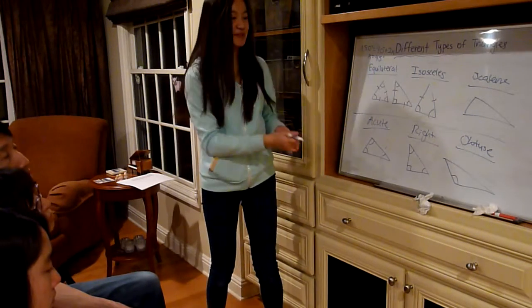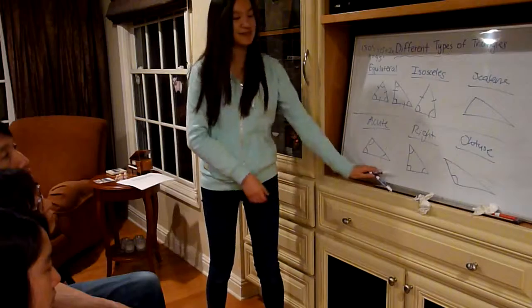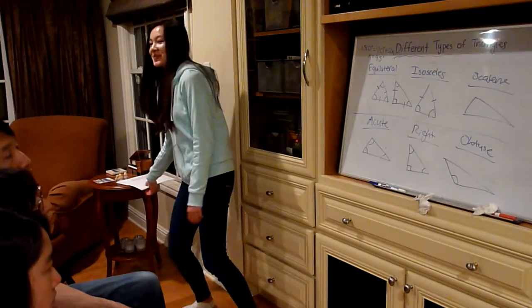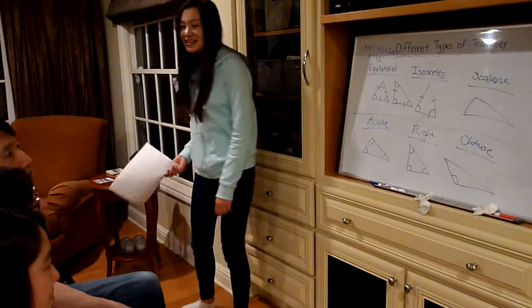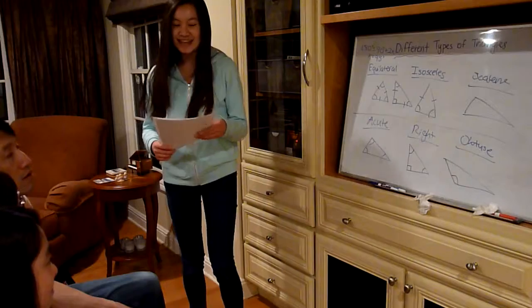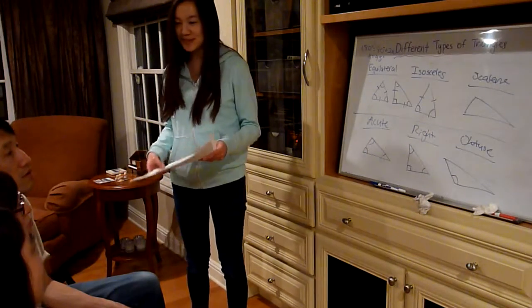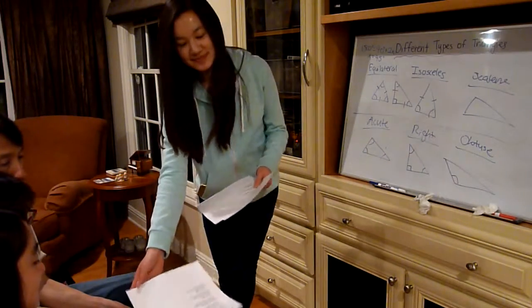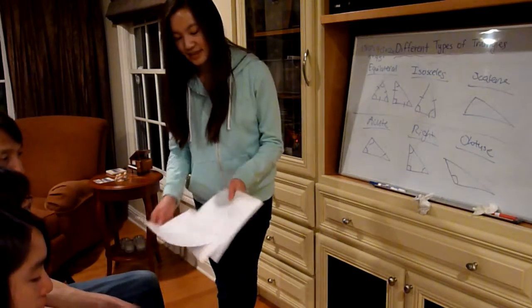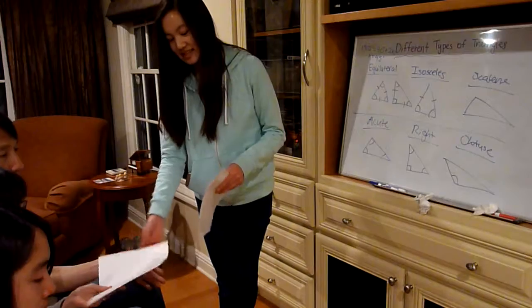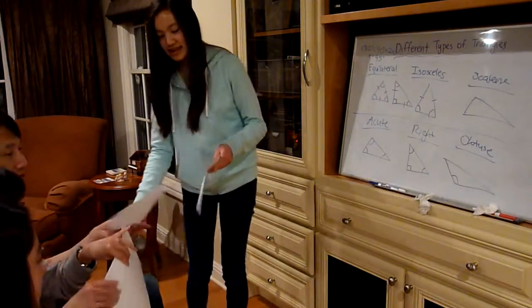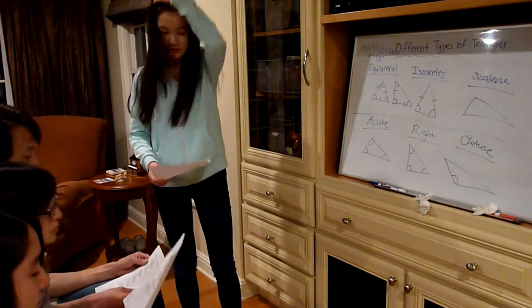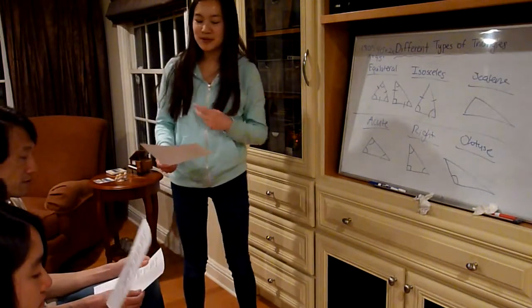Those are the types of triangles, and I have a song to help us remember the names. It's to the tune of Row, Row, Row Your Boat.